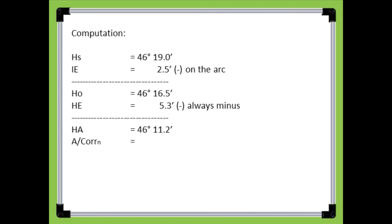Subtract the apparent altitude correction of 0.8 minutes from the apparent altitude of planet Venus. The result is the true altitude of planet Venus, which is 46 degrees and 10.4 minutes.